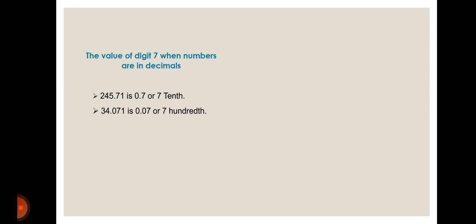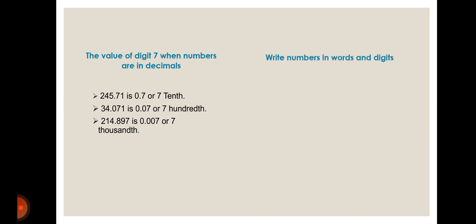In 34.071, the digit seven is at the second position after the decimal point — the hundredths position — so we write it as 0.07 or seven hundredths. In 214.897, seven is at the third position after the decimal, which is thousandths, so the value is 0.007 or seven thousandths.